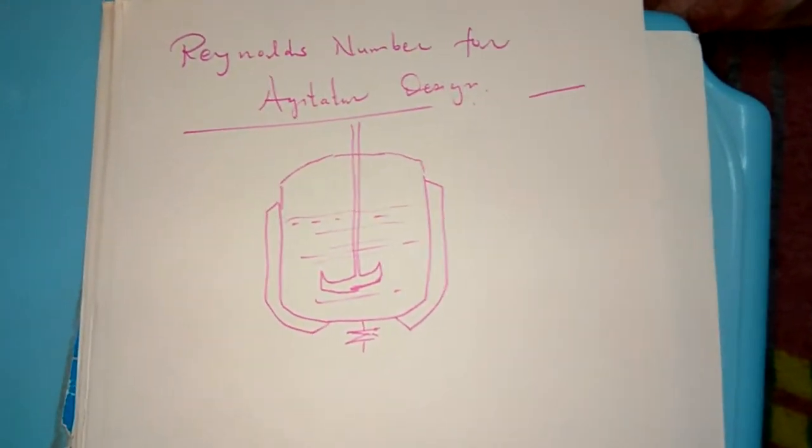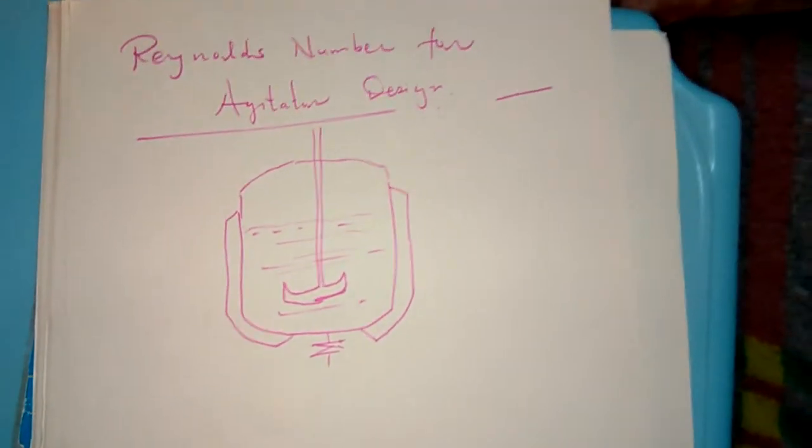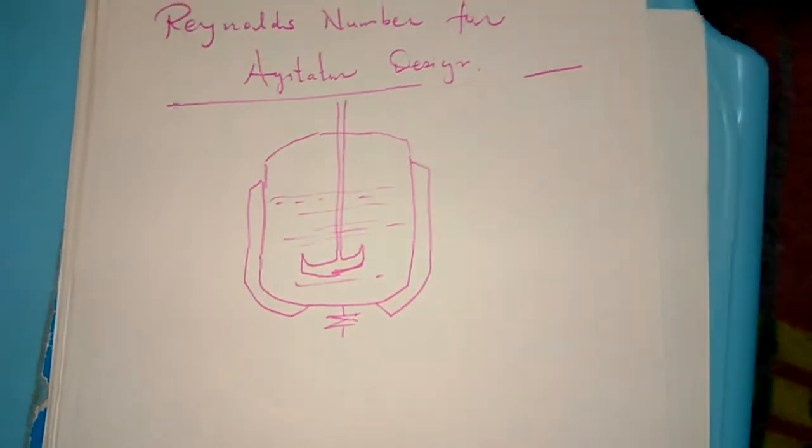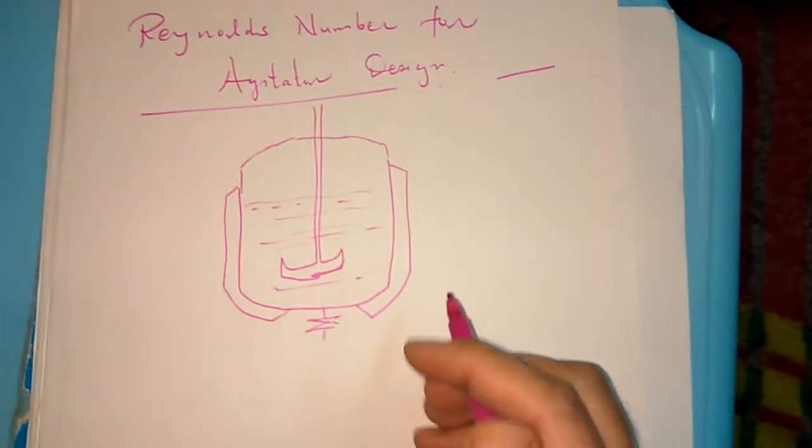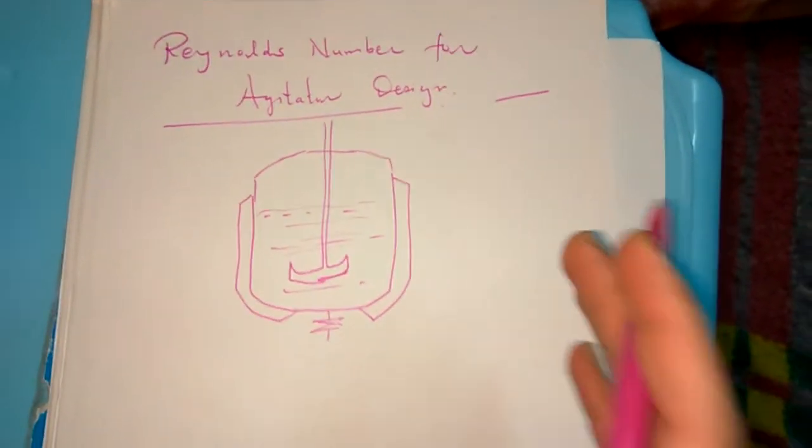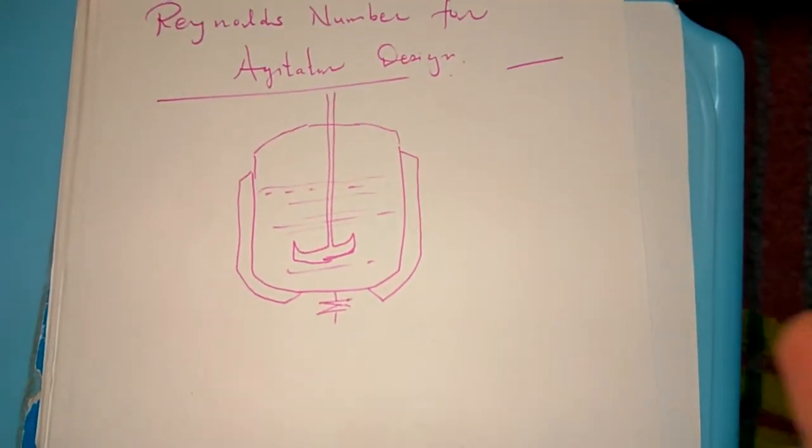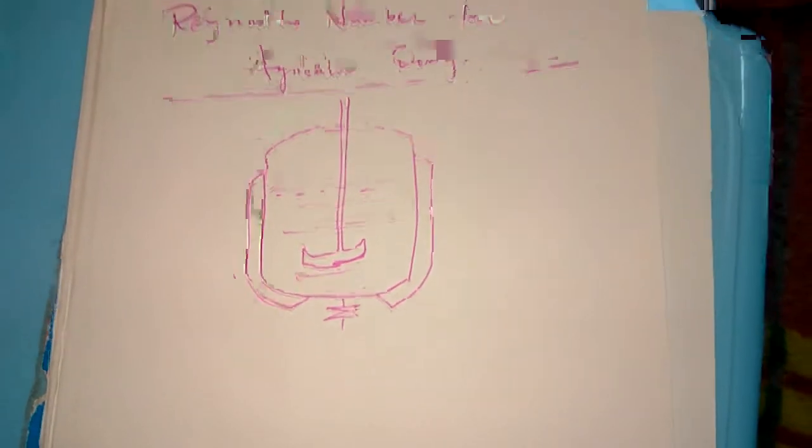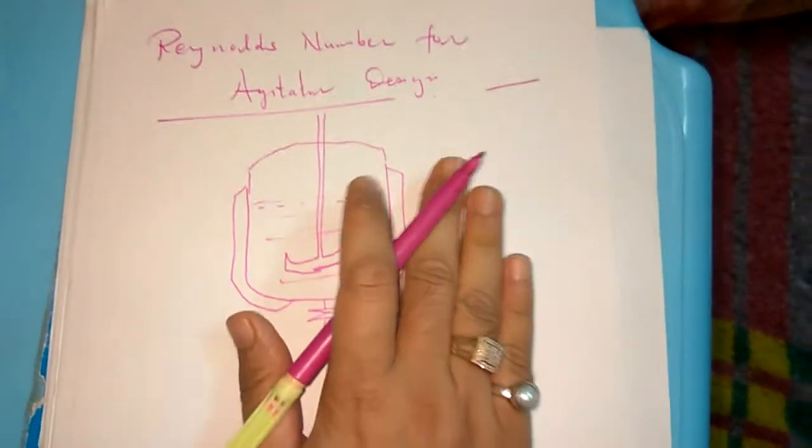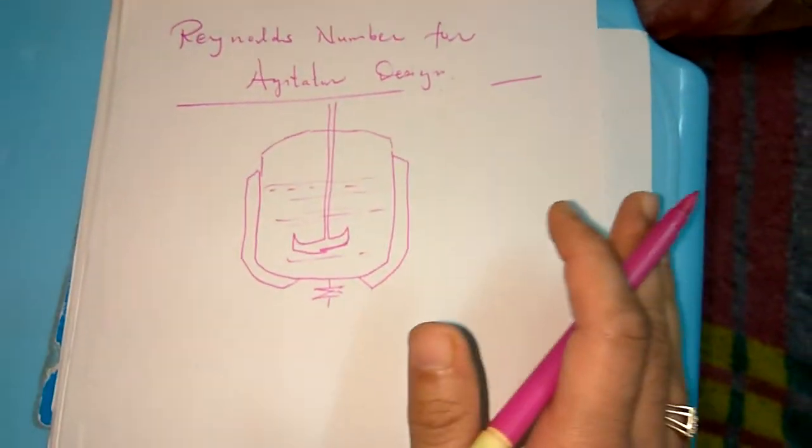Hi friends, every time I come with you with new knowledge and new concepts. Today our concept is for chemical engineers. Our concept is to find out the Reynolds number for the agitator design. It is the most important topic for the scale-up purpose.